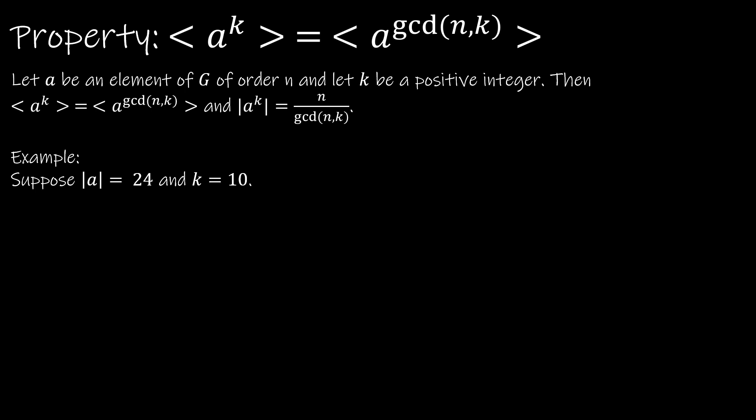The property says let A be an element of G of order N. So A is of order N, and let K be some positive integer. Then the cyclic subgroup generated by A to the K is equal to the cyclic subgroup generated by the greatest common divisor of N and K. And the number of elements of that group is the same as N divided by GCD of N and K. When I read something like that, it's really hard to make sense of it — there's just a lot of symbols and numbers.